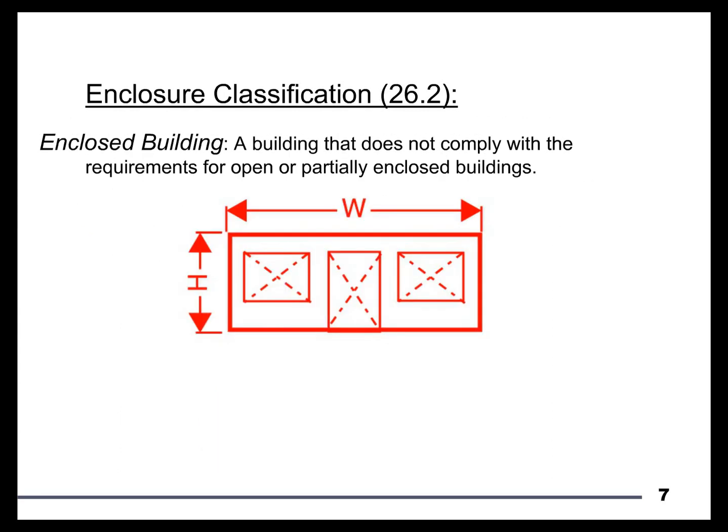If we are not an open building and not a partially enclosed building, the code then allows us to classify the building as an Enclosed building. This is somewhat unfortunate, because I'd argue the vast majority of buildings we engineer are enclosed buildings. But in order to reach that classification, you do need to check: am I open? Am I partially enclosed? And the only way to get to Enclosed is to say no to those two options.